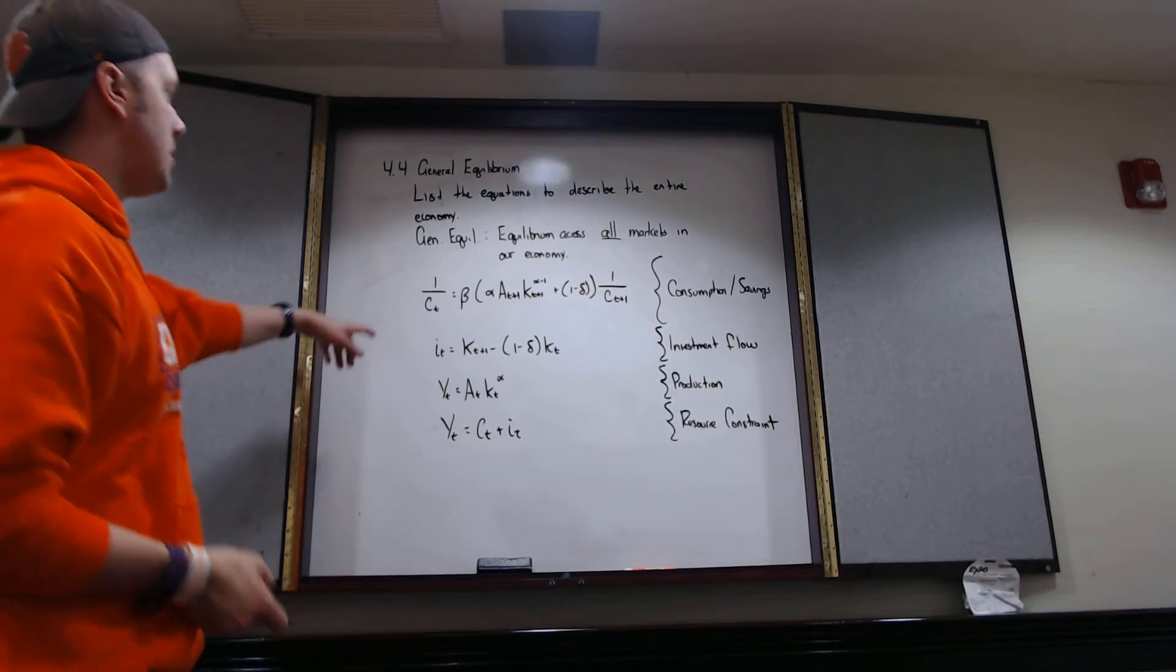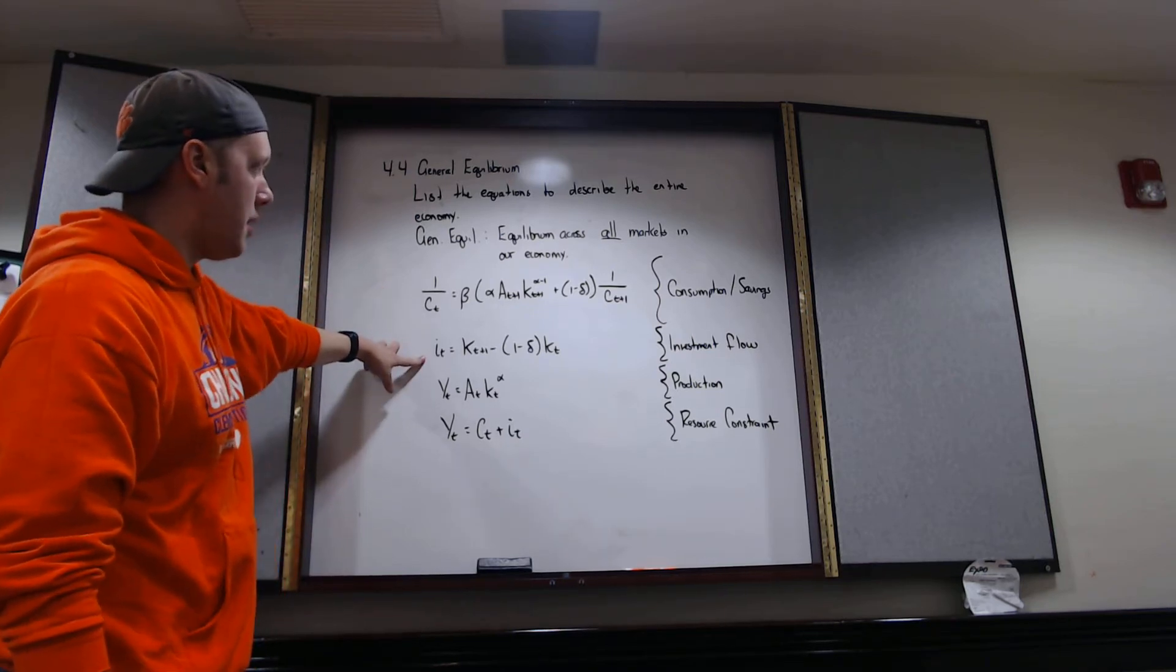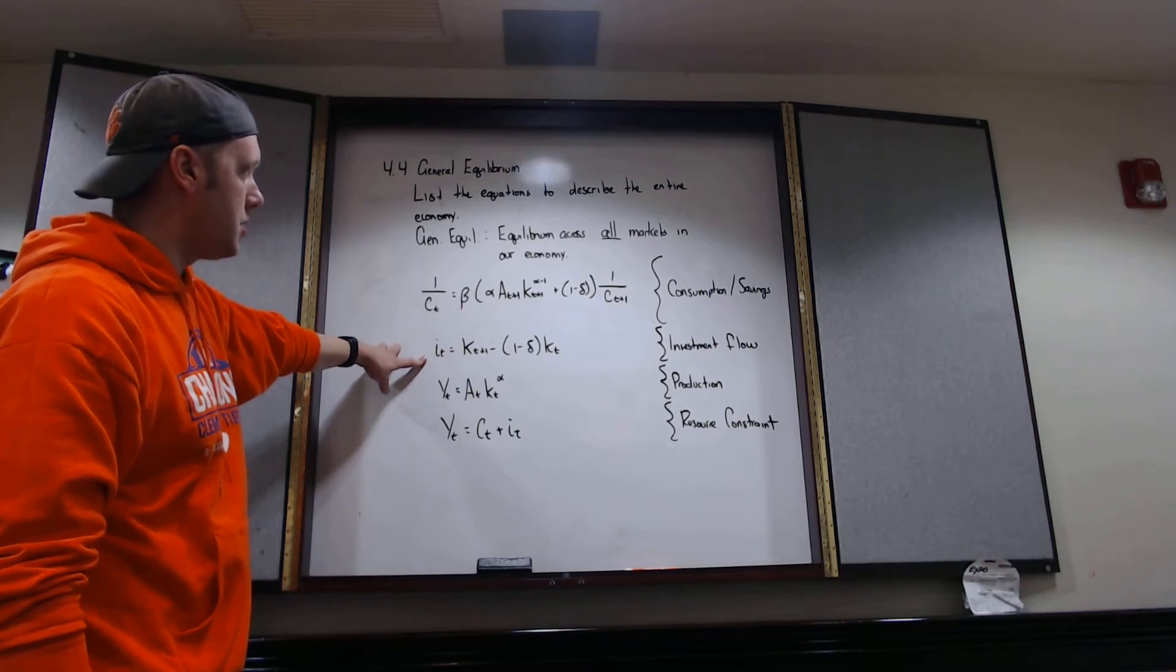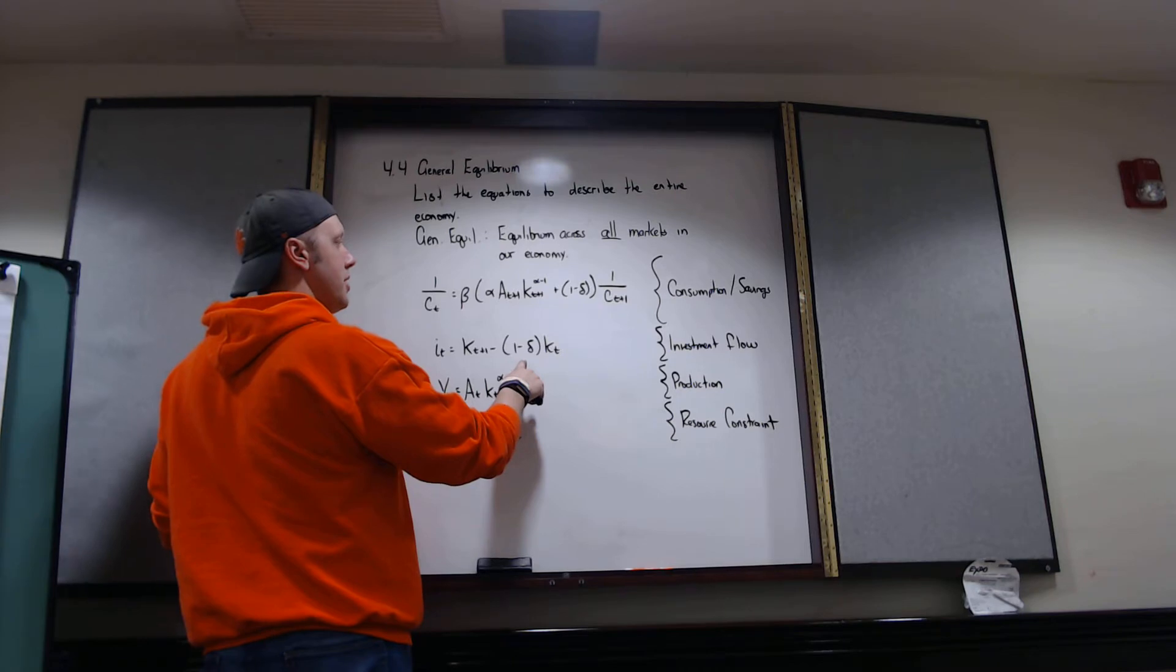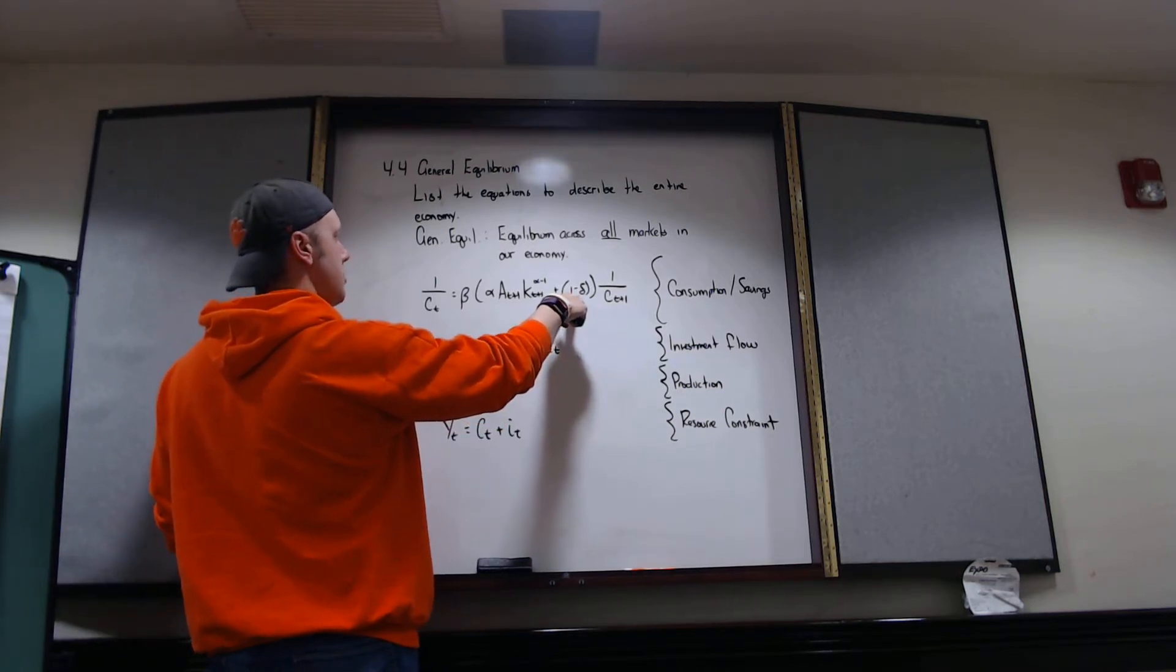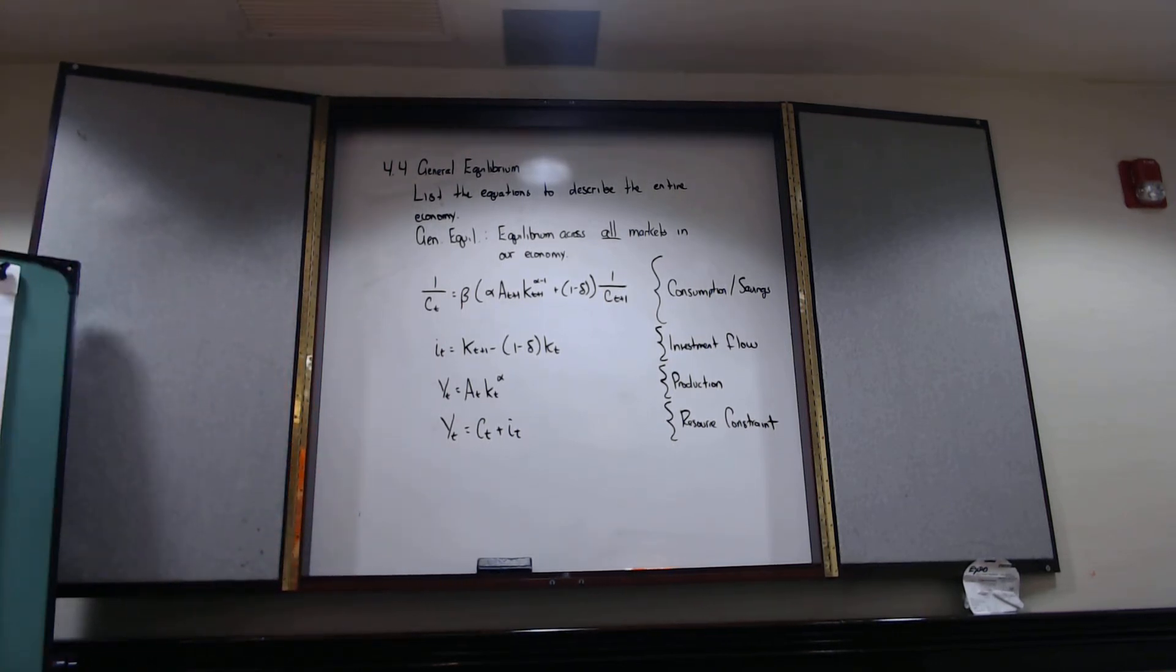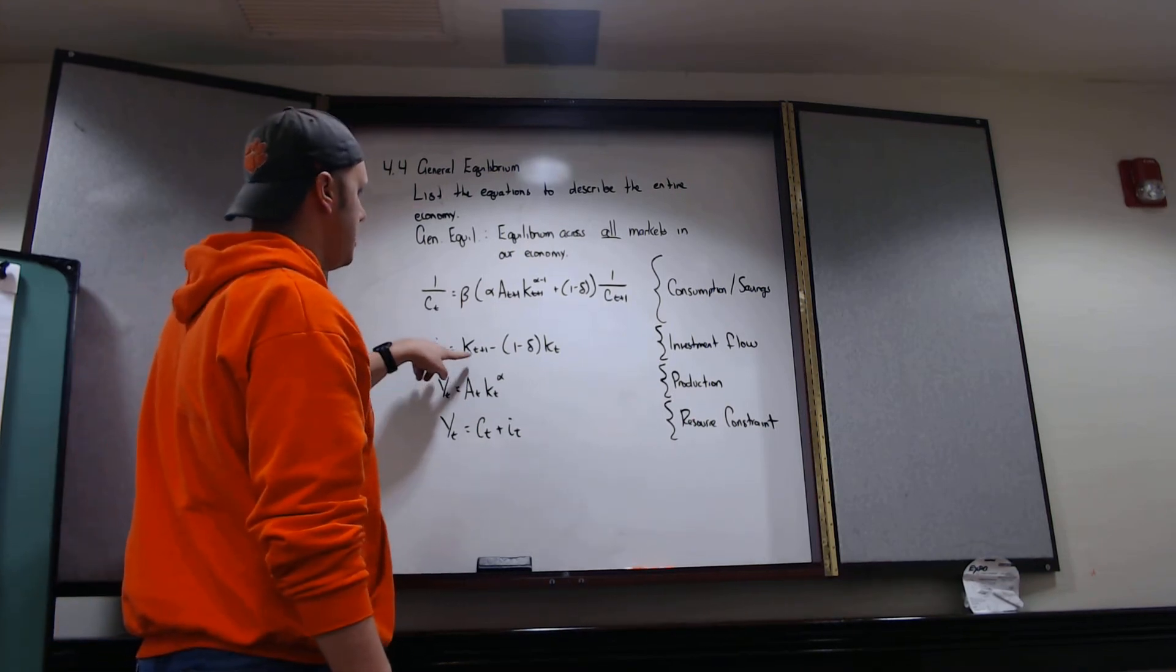I've got something to describe my flow of consumption and savings. I've got an equation that describes how capital evolves. Based on how capital evolves, we see we've got this one minus delta in the investment flow equation. Well, that one minus delta also shows up in my consumption savings equation. Delta is an exogenous variable in this investment equation. Investment is endogenous.